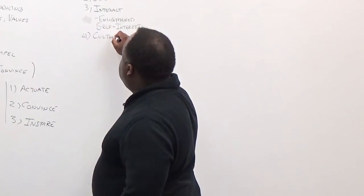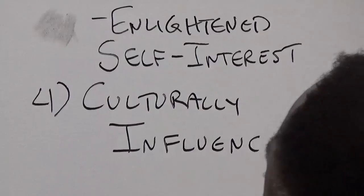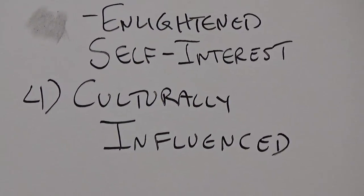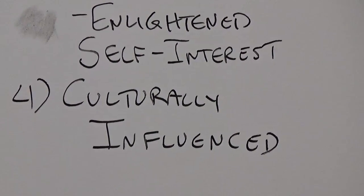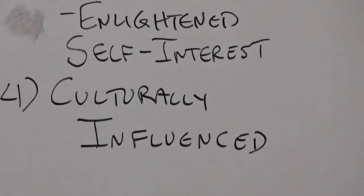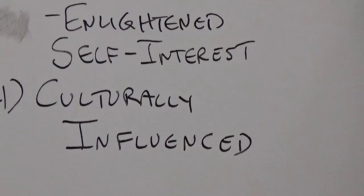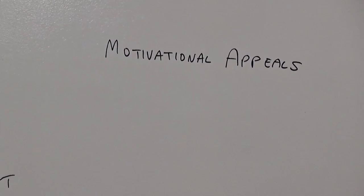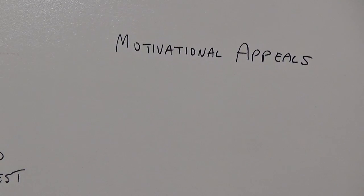And number four, our motives are culturally influenced. In other words, where we're from, where we're raised, our religious beliefs — a lot of that stuff plays a role in what's important to us. You've got to understand these principles of motives in order to understand how the different motivational appeals work — how can we reach people to get them to do what we want, or in the alternative, not do something. We've got a number of motivational appeals, one of which is altruism.